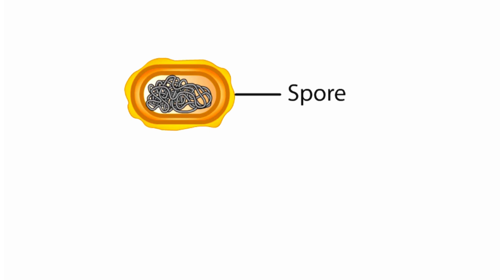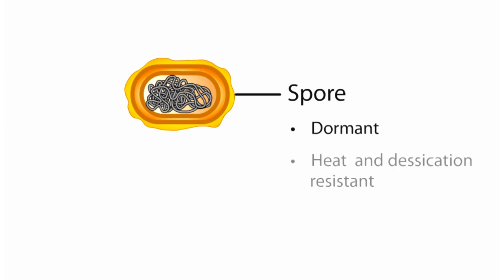When starved for nutrients, certain gram-positive genera, including some important pathogens, can develop dormant, heat-resistant and desiccation-resistant spores. Most of our knowledge of bacterial spore formation comes from the gram-positive soil bacterium Bacillus subtilis.